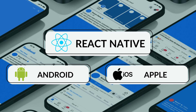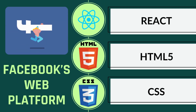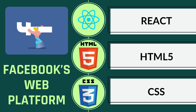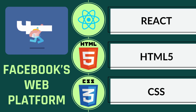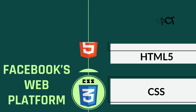This approach enables Facebook to deliver a consistent user experience across both platforms while maintaining high performance. Facebook's web platform is fueled by React along with HTML5 and CSS. React's component-based architecture allows for dynamic interfaces with fast load times and personalized content. CSS helps create responsive designs that look great on any device, ensuring your timeline flows smoothly whether you're on a desktop or scrolling on your phone.